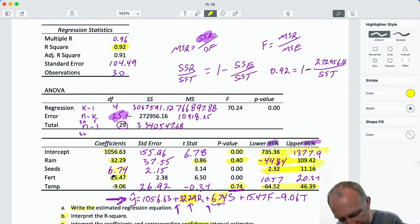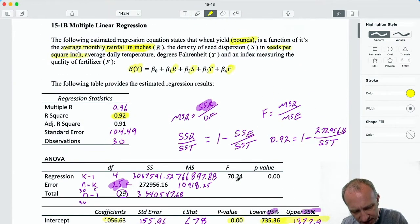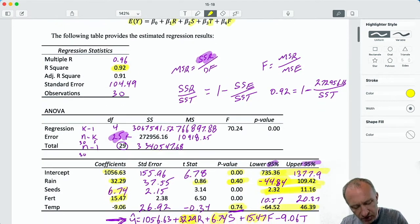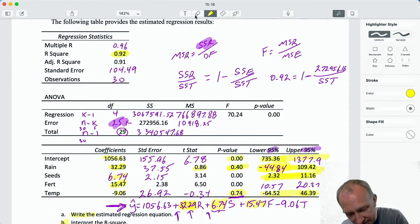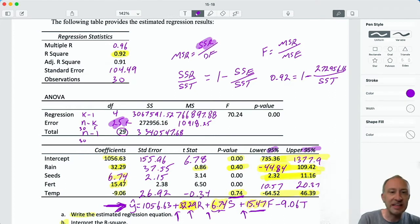Fertilizer, point estimate. What is our measurement, our units? This is an index. So for each additional point on this fertilizer quality index, each additional point of quality increases average wheat yield by 15.47 pounds. Okay, you kind of get the hang of it. You see the pattern of how we interpret these.